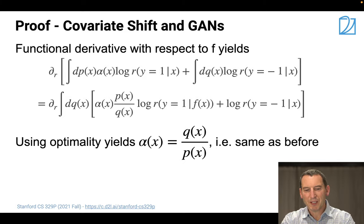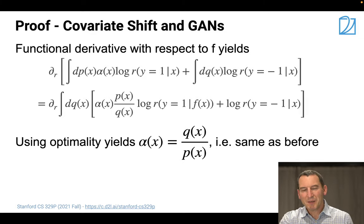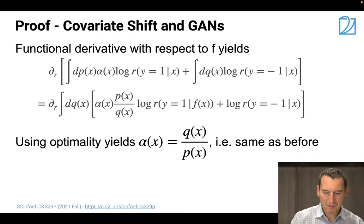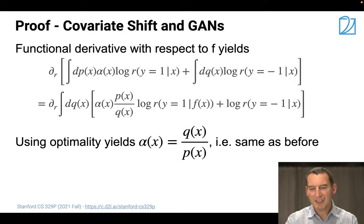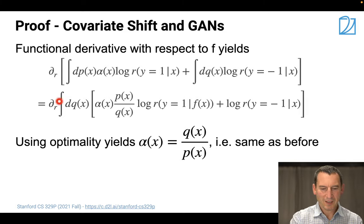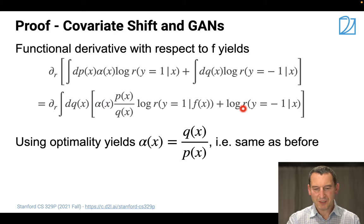Plugging this knowledge back into the integrals - remember, we don't have just a single covariate x; x can take on many different values - the optimality derived on the previous slide has to hold for all possible values of x. I can pull out the integral dq(x), and get alpha times p over q plus this term. Working out optimality gives us alpha equals q over p.